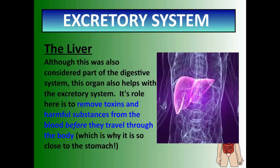The liver is another part of the excretory system we don't usually think about because it's usually connected with the digestive system, where it produces bile. In the excretory system, the liver is the organ that helps with removal of toxins and harmful substances from the blood. All of the blood in the body circulates through the liver, diffusion occurs, and toxins come out of the blood into the liver. The liver then produces bile to help break down those substances so they exit the body. This is also why the liver is located so close to the stomach — any toxins ingested from food are immediately addressed.